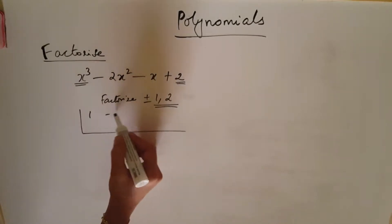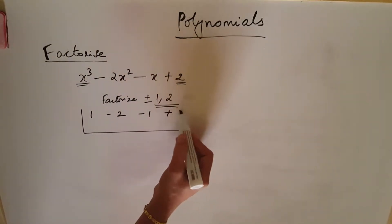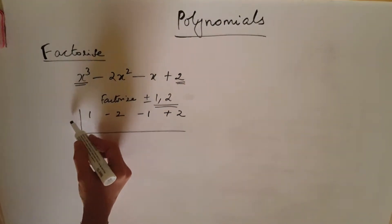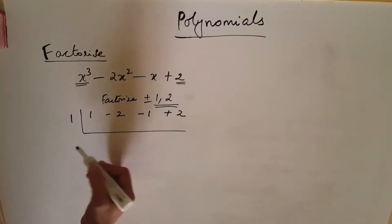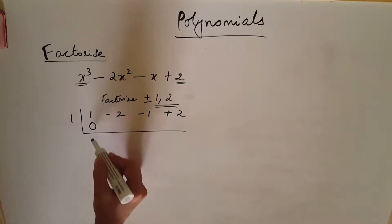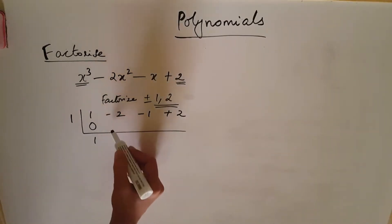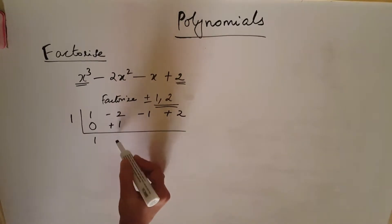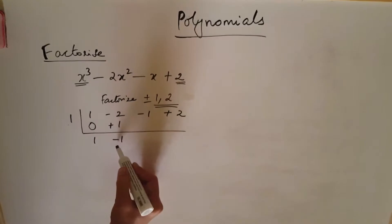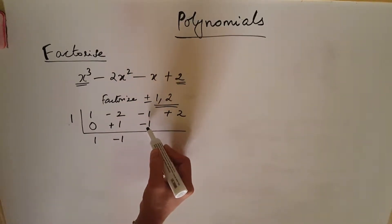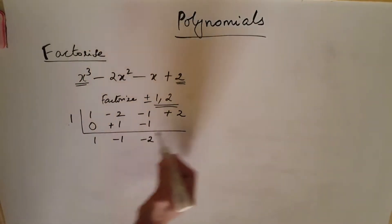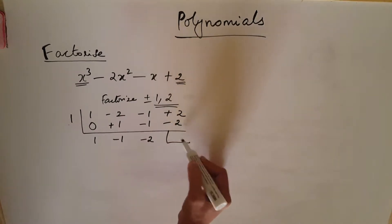Take 1, minus 2, minus 1, plus 2. First we will take plus 1. This is the trial and error method. You put 0 here: 1, 0, 1. 1 into 1 gives plus 1, so the remaining is minus 1. 1 into minus 1 gives minus 1, and minus 1 minus 1 is minus 2.